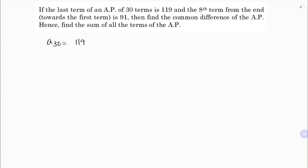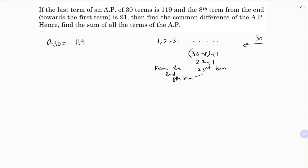The eighth term from the end — since there are 30 terms, we calculate: 30 minus 8 plus 1 equals 23. So the eighth term from the end is the 23rd term.